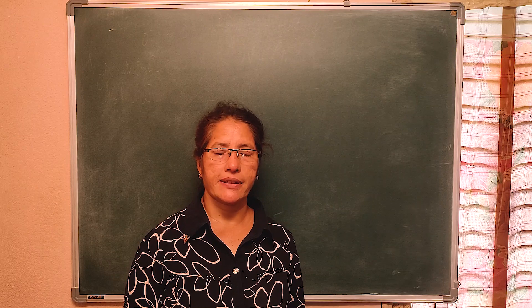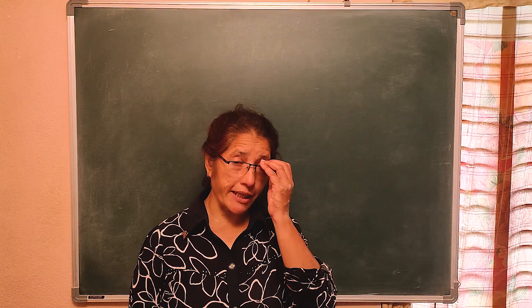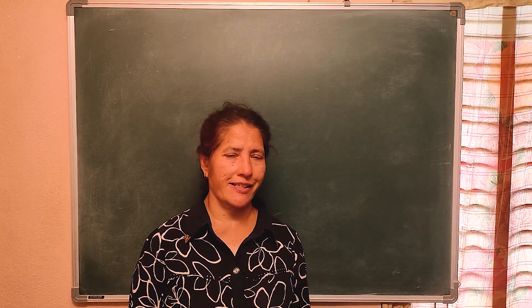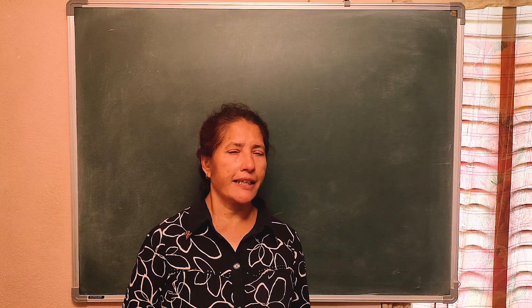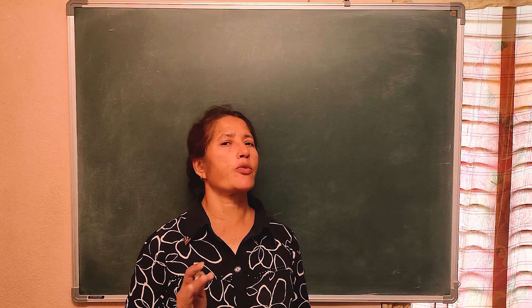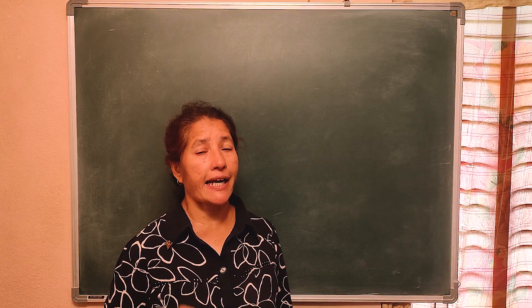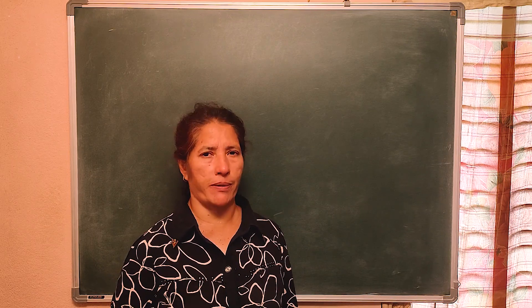Hello everyone. In the last class we studied about the areas of similar triangles. Areas of similar triangles are proportional to the squares of the corresponding sides. I will now solve some problems.